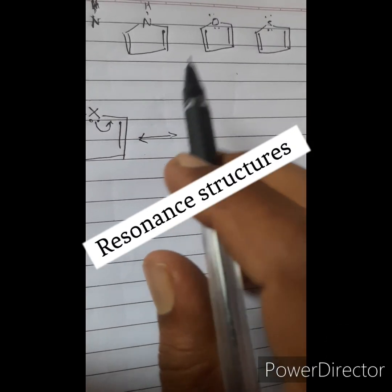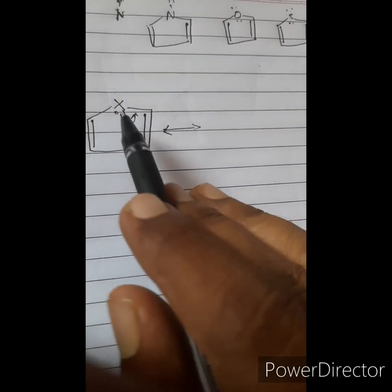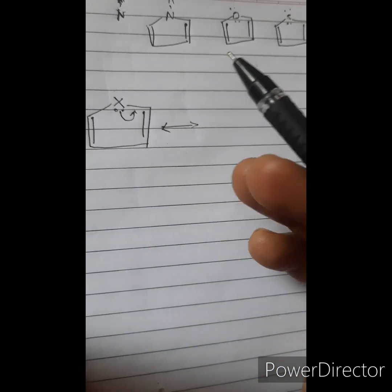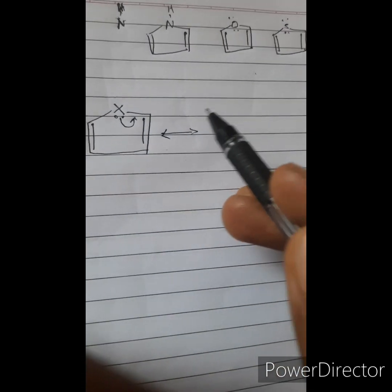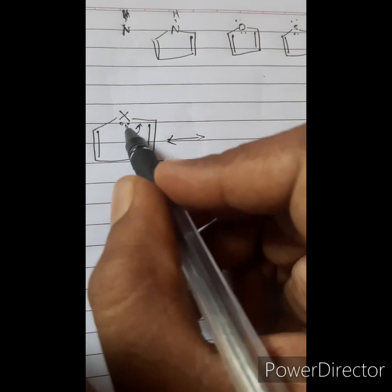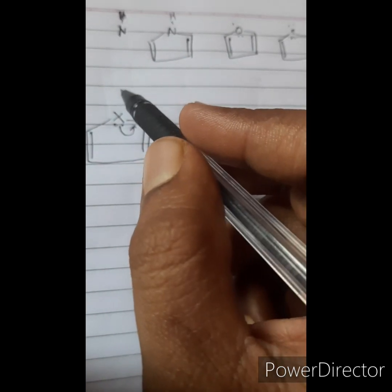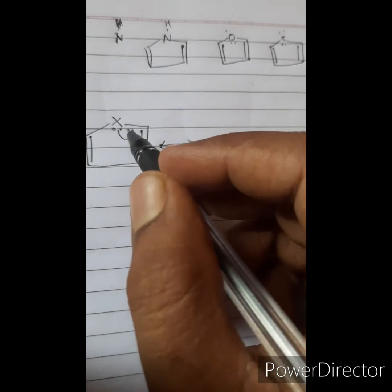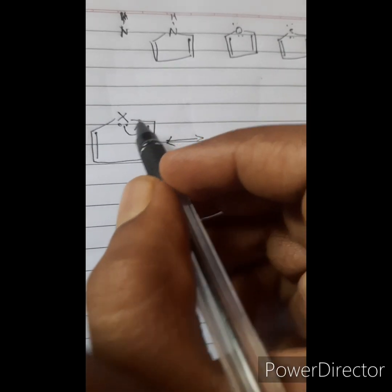The compounds pyrrole, furan, and thiophene share a general structure from which you can draw resonating structures. In the case of pyrrole, the heteroatom X is nitrogen connected with hydrogen; in the case of furan, X is oxygen; and in the case of thiophene, X is sulfur.